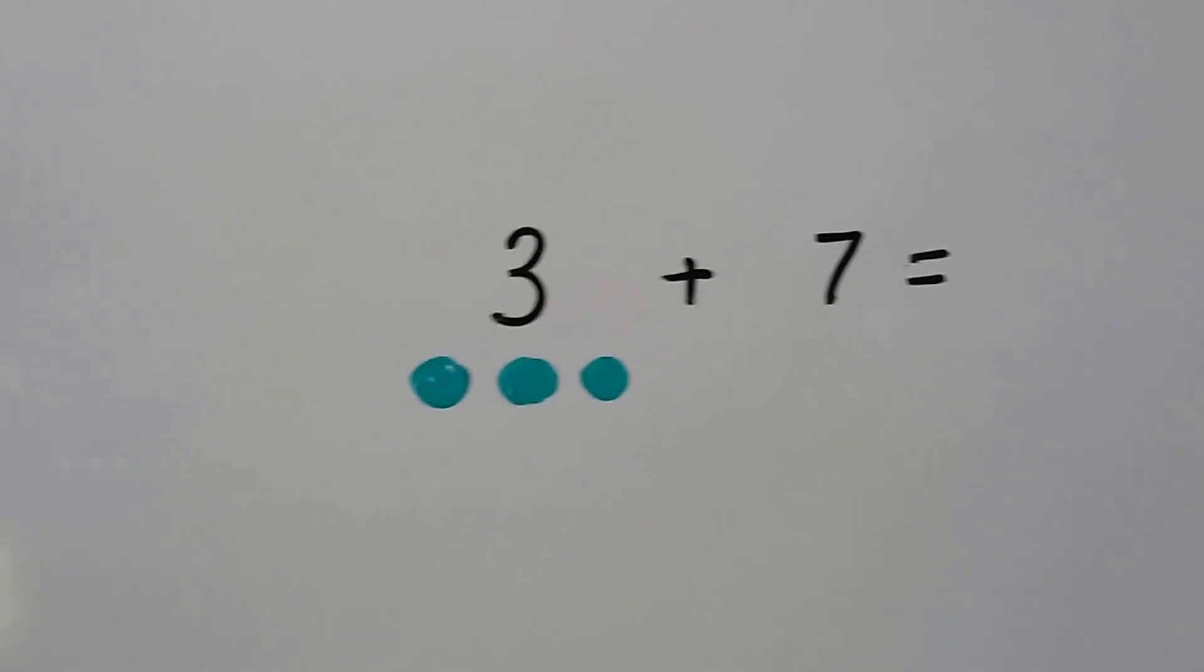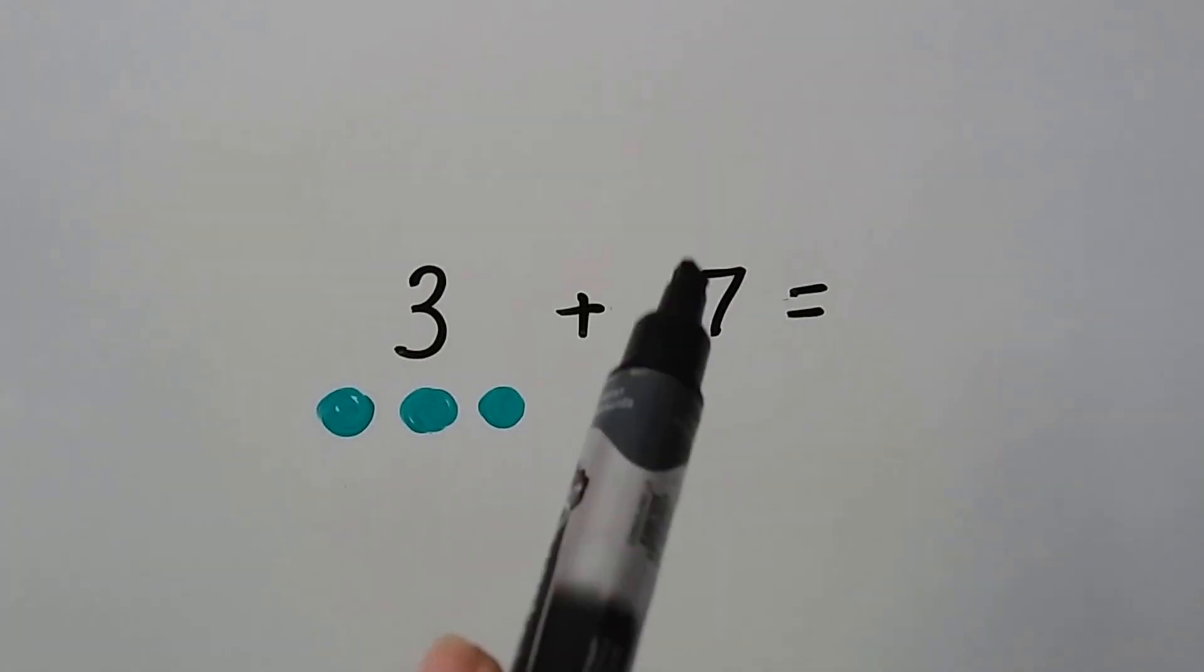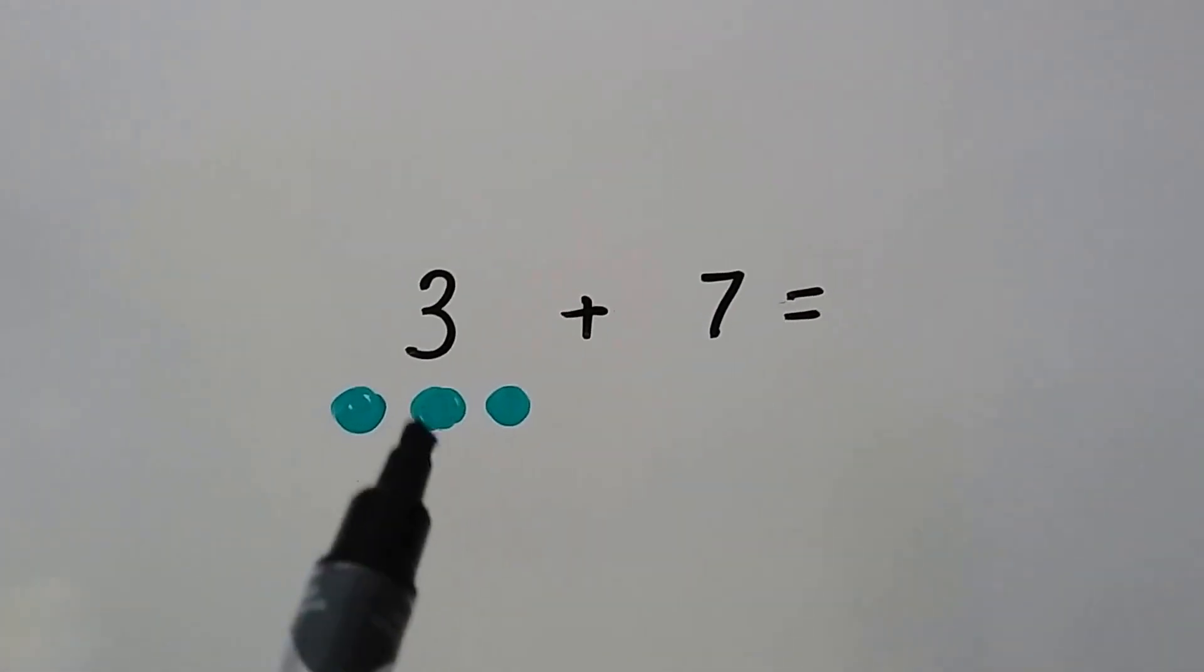We have 3 plus 7. Now the 3 is in the front, but remember we start with the larger number. So we're going to start with the 7: 8, 9, 10.